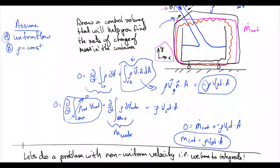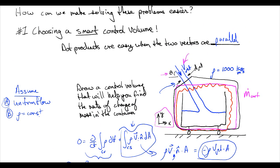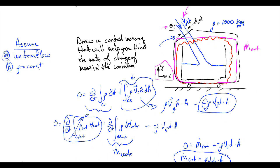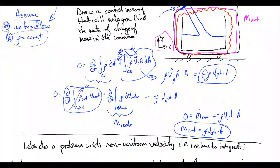That was a quick example using conservation of mass — Reynolds transport theorem applied to conservation of mass — to calculate the rate of change of mass in a cart. We used three main tools to simplify: one, judicious choosing of our control volume so it was perpendicular to fluid flow, making the unit normal parallel to the flow; two, assuming uniform flow so velocity could be pulled out of the integral; and three, assuming constant density so it could also be pulled out. The result was no integration at all, and we solved for M-dot-cart easily.